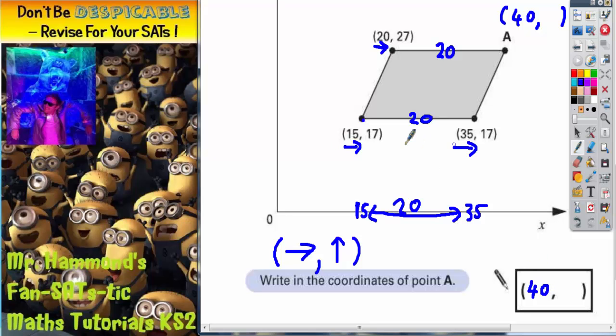Okay, so 15 to 35 is 20, so this is going to be the same. So 20 plus 20 makes 40, that's where it comes from.